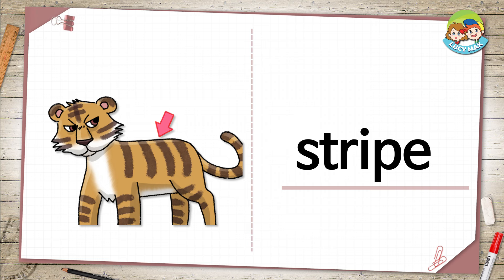Stripe. Look at the arrow. It points to a line on the tiger. The lines are called stripes. The tiger has many stripes. What other animal has stripes?